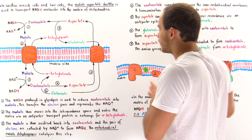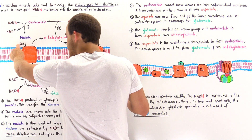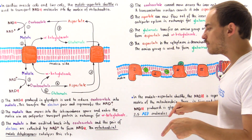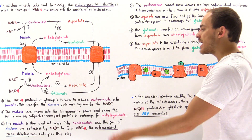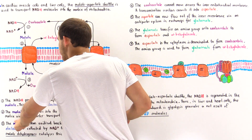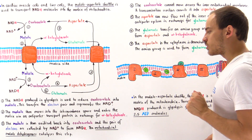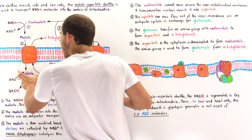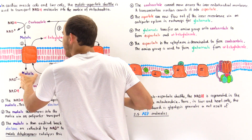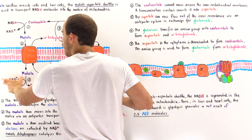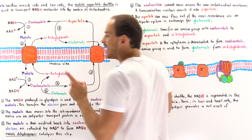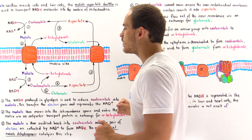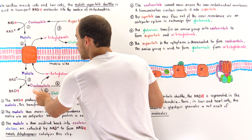That NADH can be used by the electron transport chain. In step two, once malate is formed in the cytoplasm, it moves into the intermembrane space via the outer membrane of the mitochondria, then enters the matrix via a special antiporter transport protein in exchange for alpha-ketoglutarate. In step three, the high-energy electrons on the malate that initially came from NADH are placed onto the NAD+ coenzyme to form NADH in the matrix, and oxaloacetate is reformed.